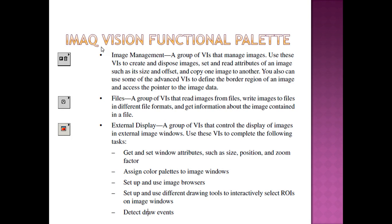The Image Vision Functional Palette includes Image Management — a group of VIs that manage images. We use these VIs to create and dispose images, set and read attributes of an image such as its size and offset, and copy one image to another. You can also use advanced VIs to define the border region of an image and access the pointer to the image data. Image Files is a group of VIs that read images from files, write images to files in different file formats, and get information about the images contained in a file.